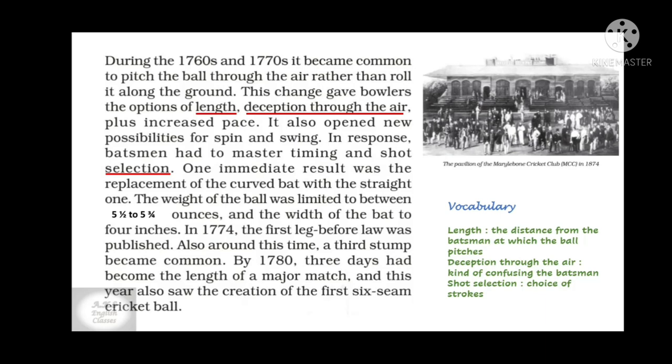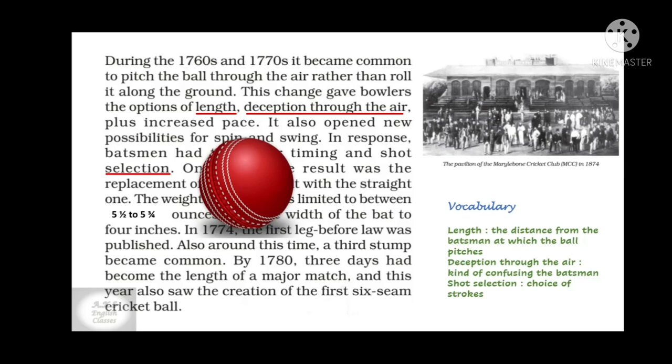The weight of the ball was limited to between five and a half to five and three-quarter ounces, and the width of the bat to four inches. In 1774, the first leg before wicket law was published. Around this time, a third stump became common. By 1780, three days had become the length of a major match, and this year also saw the creation of the first six-seam cricket ball — six seams meaning a ball with six stitches.